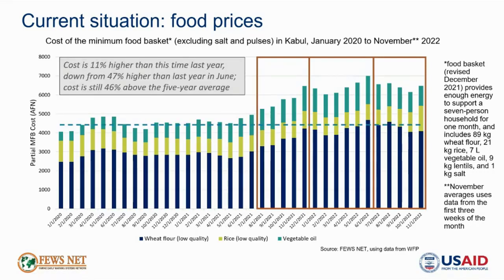Most recently, as of November 2022, the cost of this partial minimum food basket in Kabul was 11% higher than the same time last year. Though the gap has closed since June, when prices were 47% higher than the previous year, this is largely because food prices were already considerably elevated in November of last year. Compared to the five-year average, shown with the horizontal blue dashed line, the cost of the minimum food basket in November 2022 remains 46% higher than the five-year average.